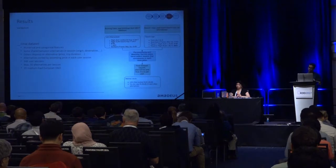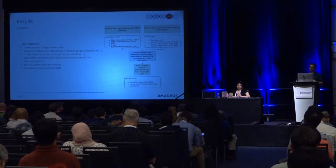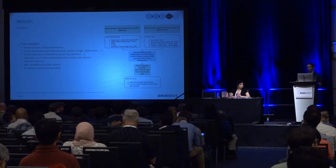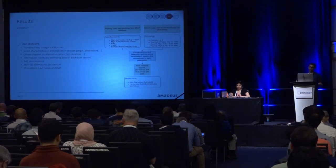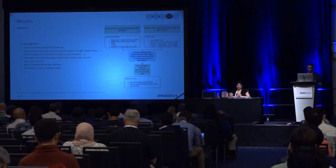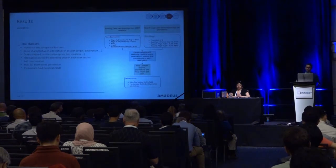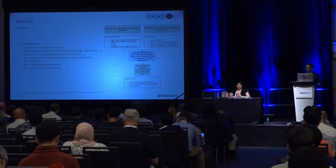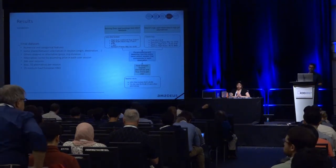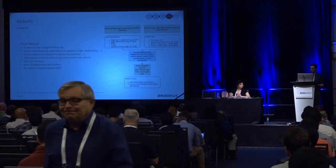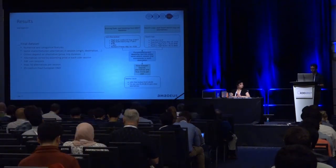We can match and create this dataset with numerical and categorical features — some shared between itineraries like origin, destination, and date, and others specific to each alternative like price, trip duration, and airlines. We sort these alternatives by ascending price. The dataset used for these experiments has around 34,000 users with a maximum of 50 alternatives per session, covering 35 medium-haul European markets.